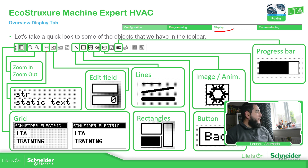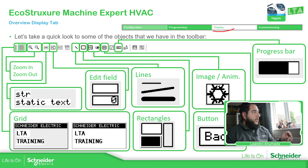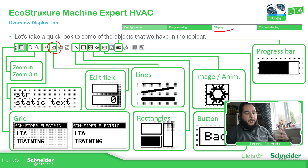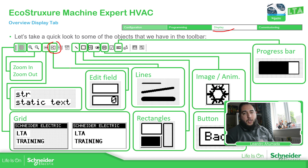We have the static text option — you can select it, place it on the display, and type whatever you want, simple as that. Then we have the edit field, which is the object that allows the customer or operator to enter a new value for the selected variable.